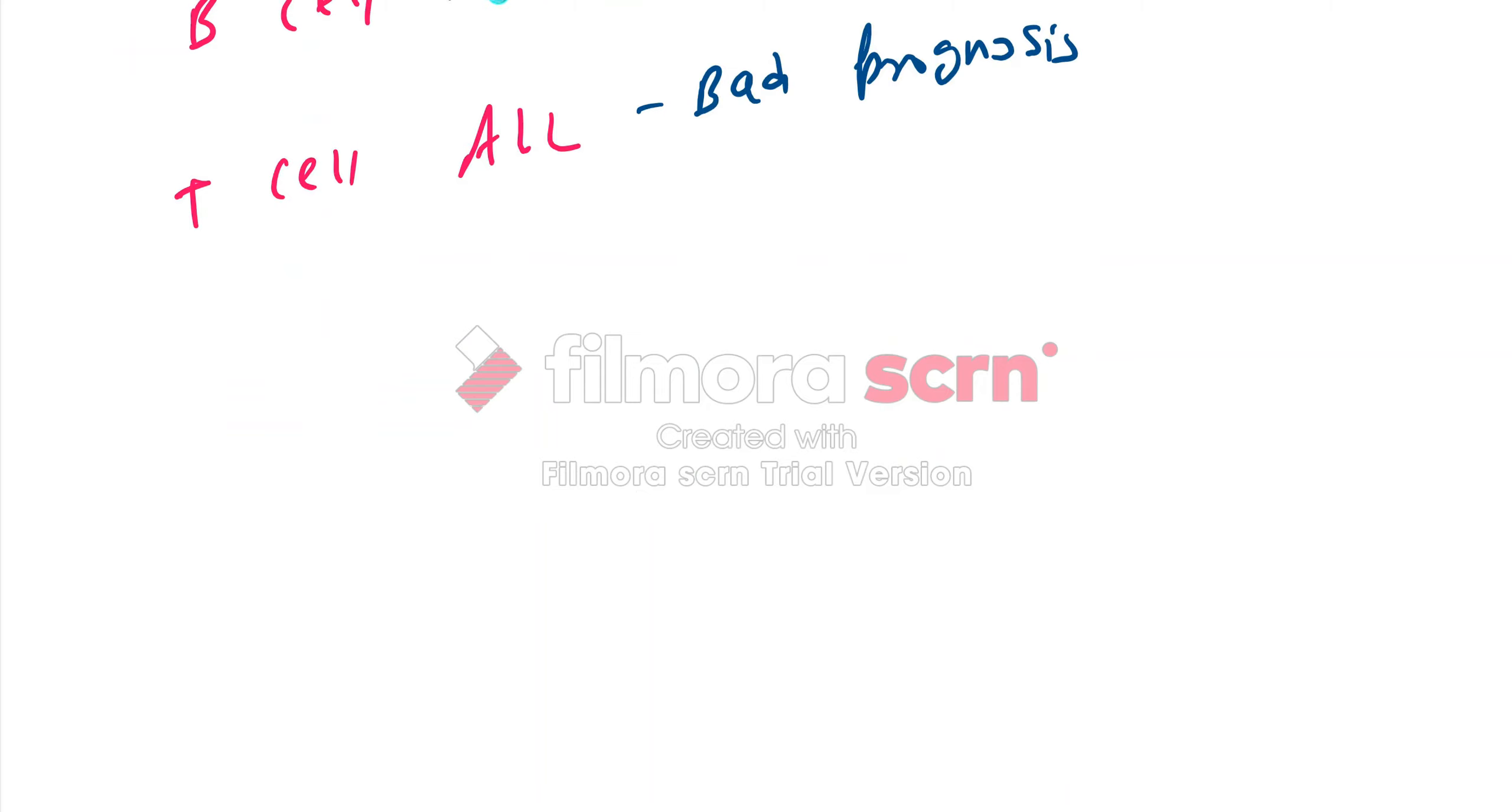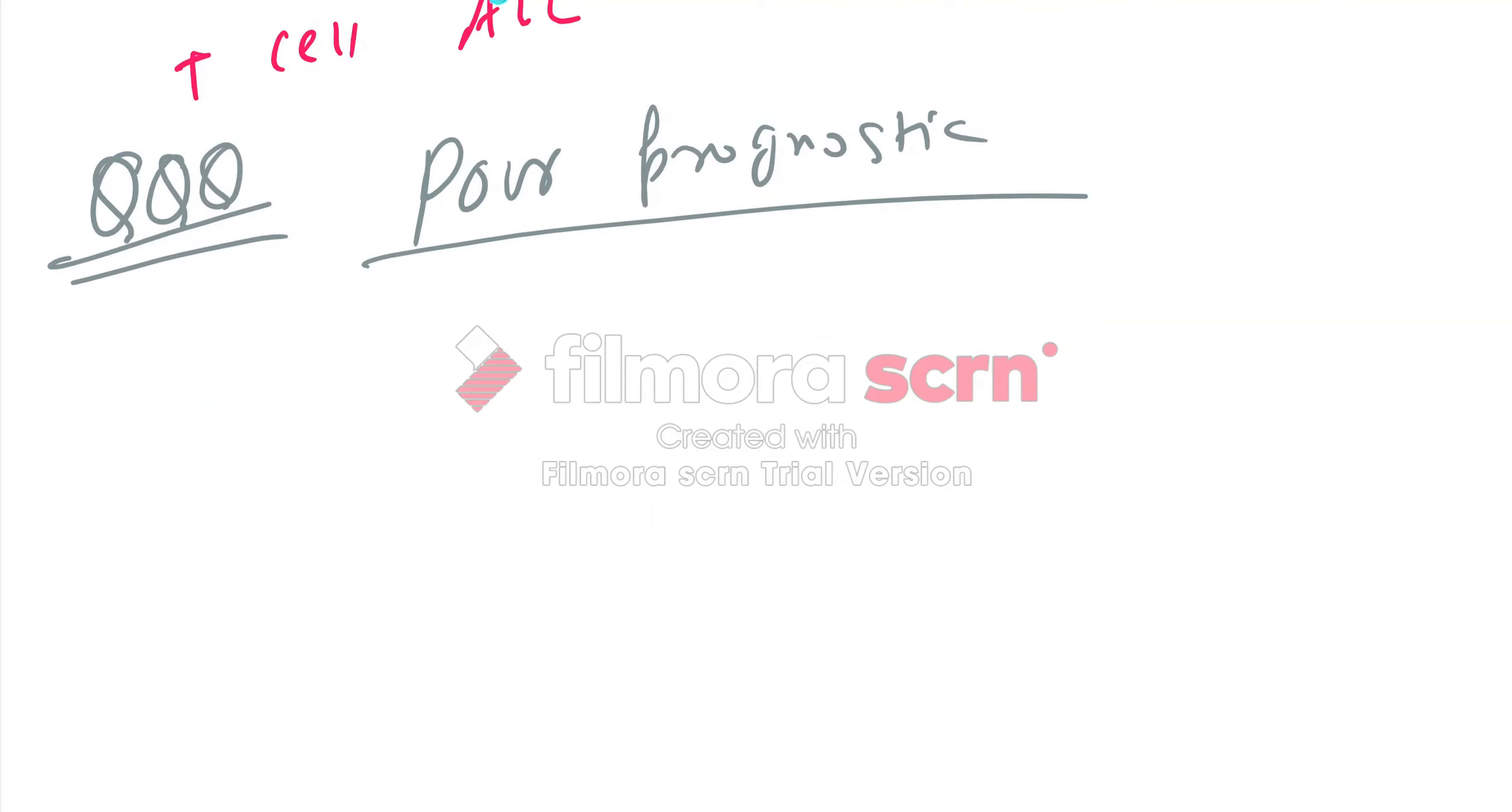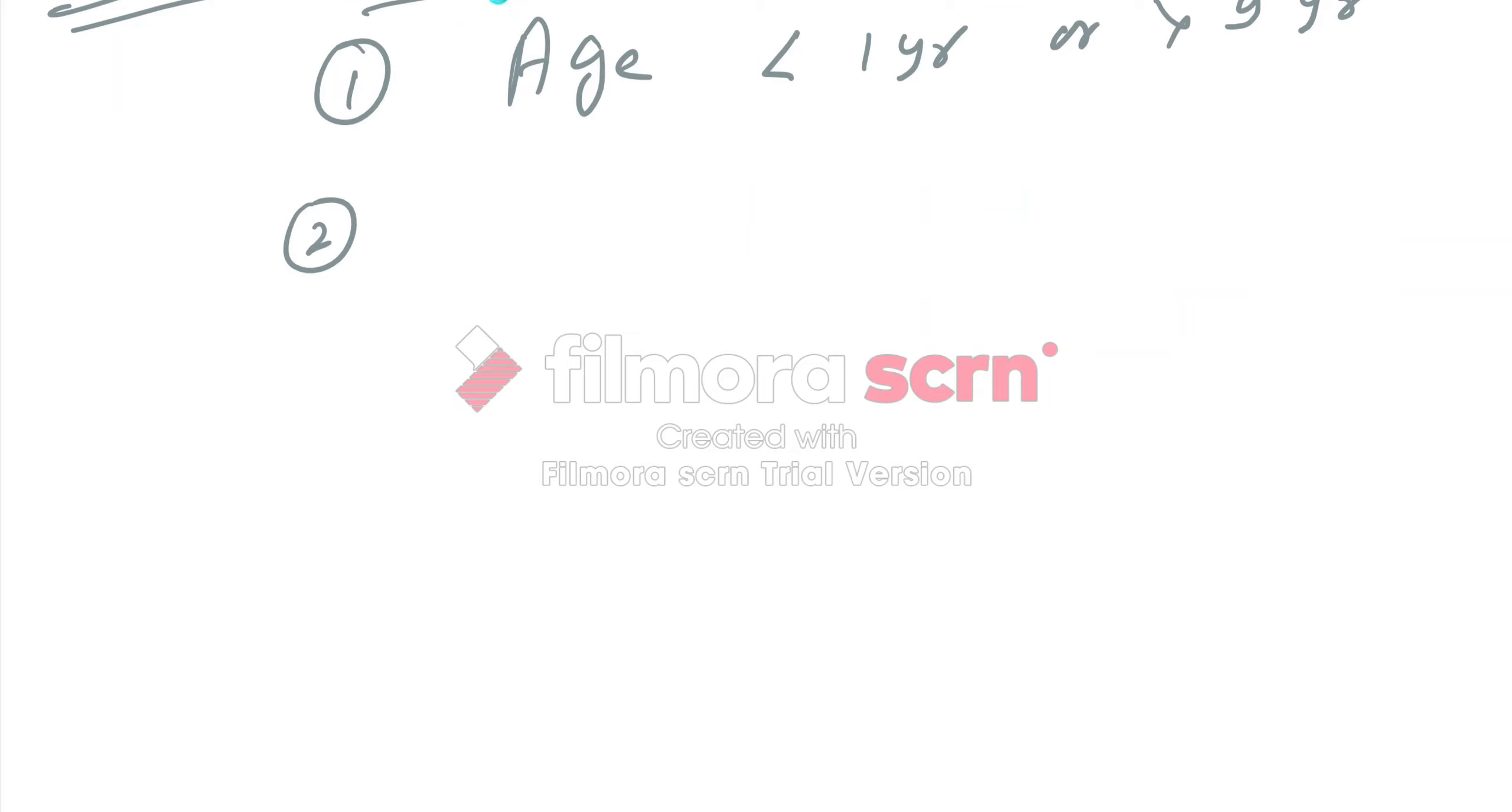What are the poor prognostic factors of ALL? We will discuss some factors which are poor prognostic. First is age: age less than one year or more than nine years will have bad prognosis. Hyperleukocytosis if leukocytes are more than 50,000 will have bad prognosis. Male sex is bad prognosis because testes are usually a site for relapse.